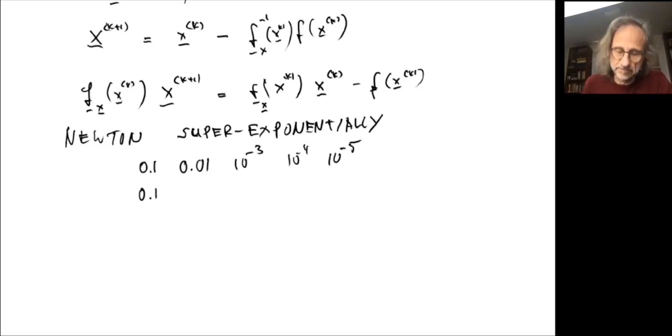Whereas in the super exponential, you would also have maybe in the first step, 10^-1, then you would have 10^-2. But then you have 10^-4, 10^-8, 10^-16, meaning the number of digits in each step doubles, rather is increased by one. So that's the super exponential convergence of the Newton, which of course is extremely powerful.